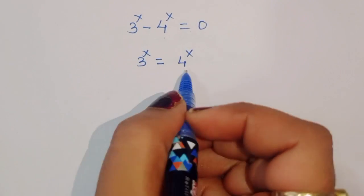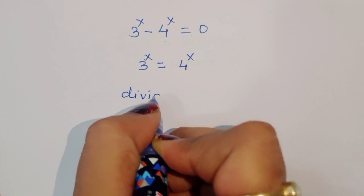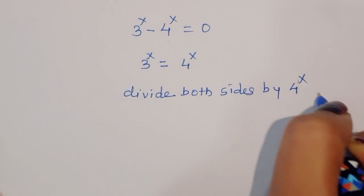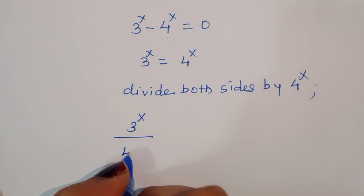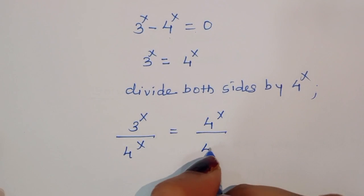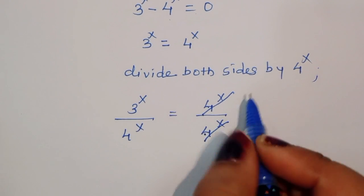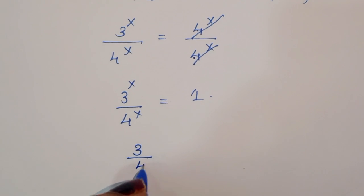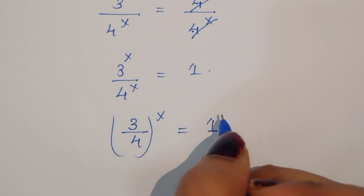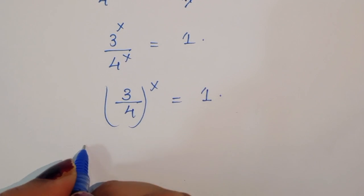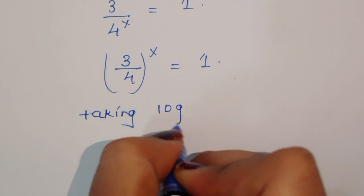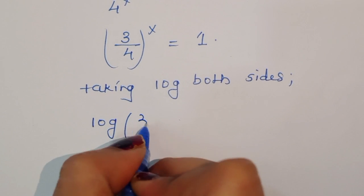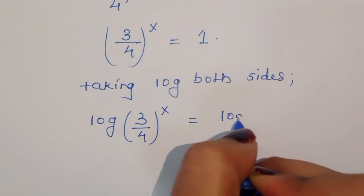From 3^x minus 4^x equal to 0, we get 3^x equal to 4^x. Now divide both sides by 4^x. Then 3^x divided by 4^x equals 1, which we can write as (3/4)^x equals 1. Now taking log on both sides.